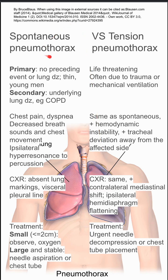Spontaneous pneumothorax has a primary and secondary condition. If it's primary, there's no preceding event or lung disease — it usually happens in thin, young men. Secondary spontaneous pneumothorax has an underlying lung disease like COPD. Tension pneumothorax is life-threatening and is often due to trauma or mechanical ventilation.